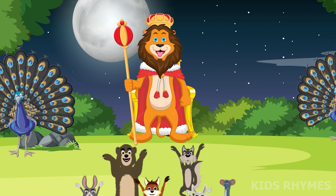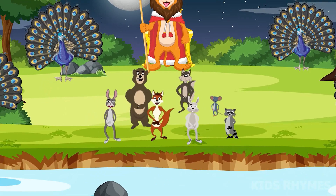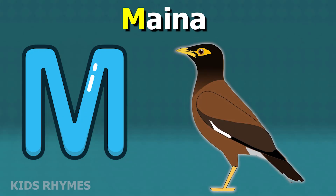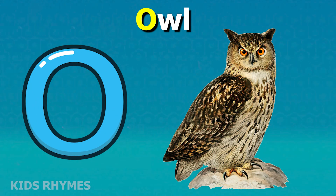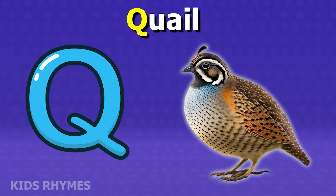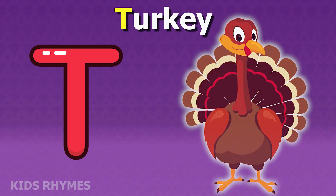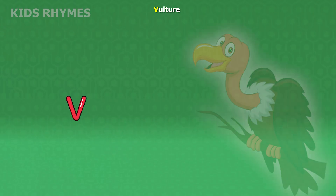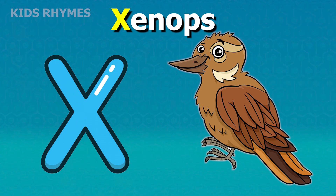M for myna, N for nightingale, O for owl, P for parrot, Q for quail, R for robin, S for sparrow, T for turkey, U for umbrellabird, V for vulture, W for woodpecker.